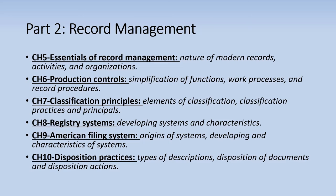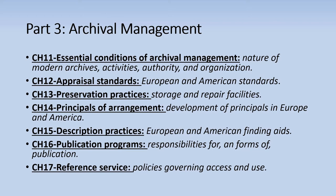In part three, Schellenberg moves on to archival management. Chapter eleven notes that the nature of modern archives determines the work of the archivist and that modern archives are difficult to identify. He notes that the archivist has a dual responsibility of both preservation and accessibility, that the archivist's authority is derived from the employer who grants it, and he also discusses the value of training programs. Chapter twelve looks at ways of assessing an archive's value, once again drawing on European examples, and distinguishes between records created in a corporate environment versus a location-oriented environment.